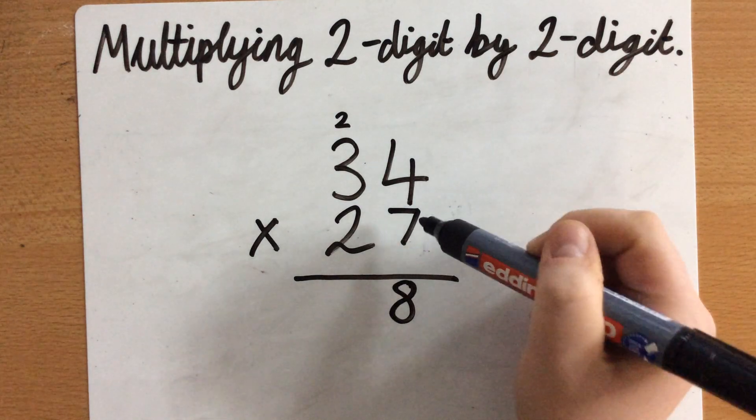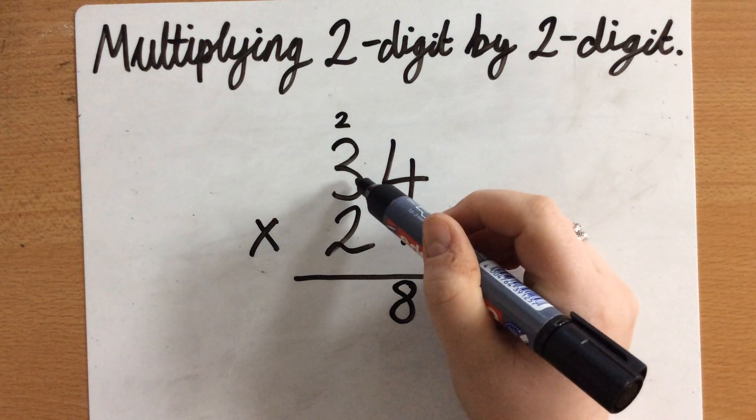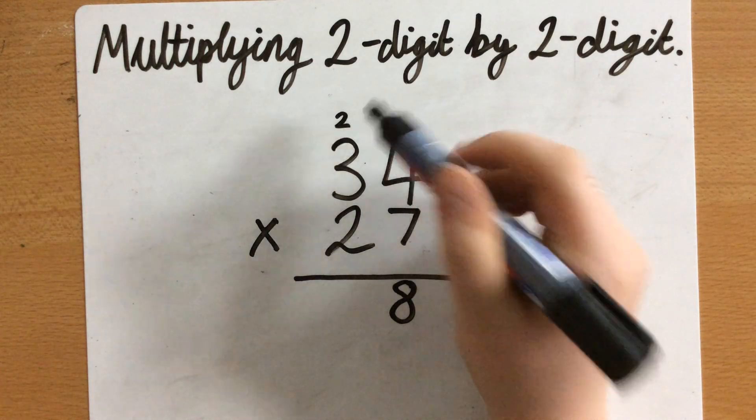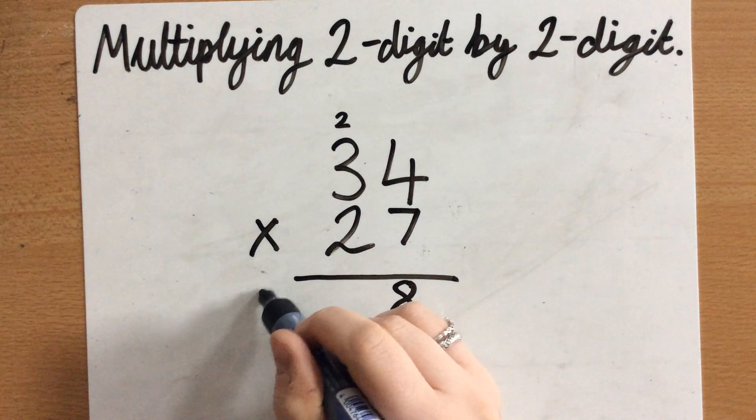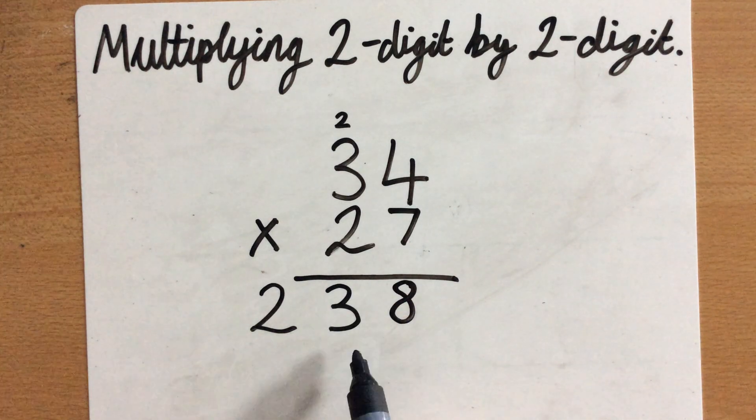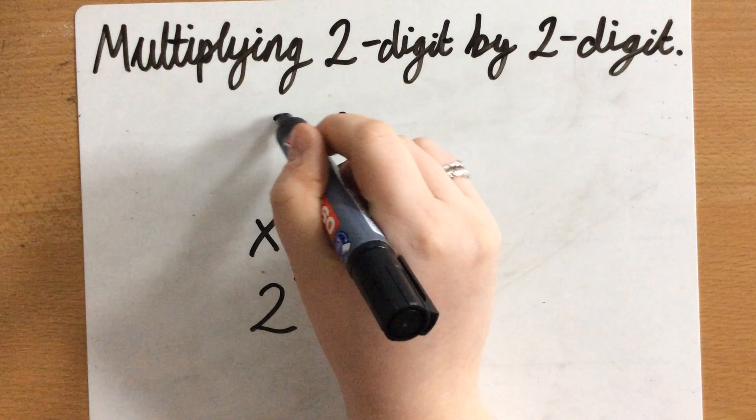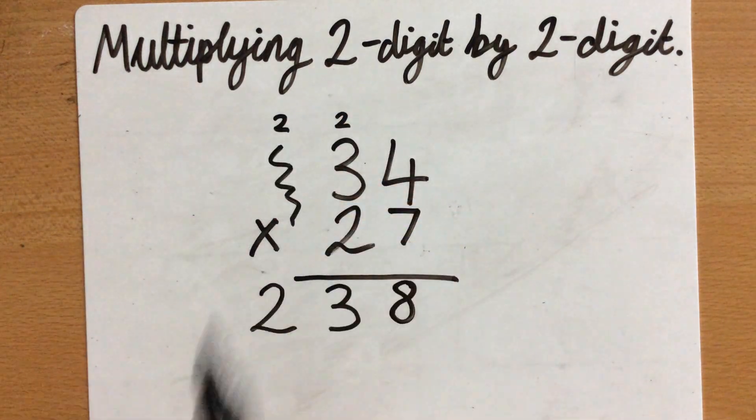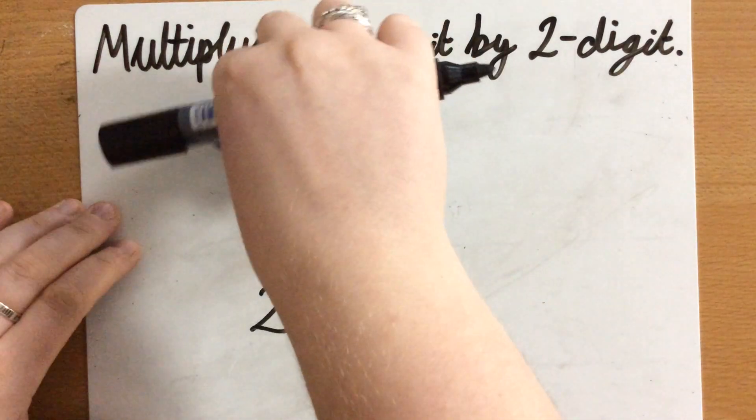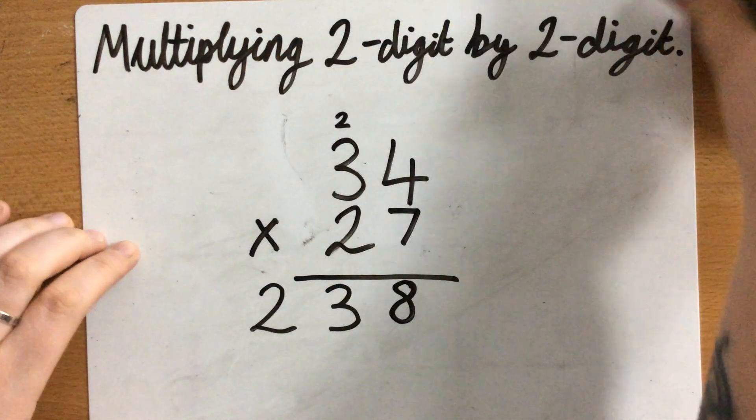So I've just done 7 times 4 is 28. Now I need to do 7 times 3. So 7 times 3 is 21. Add the 2 that I've had to carry over is 23. So because I haven't got another column to multiply, I can just write the 23 there. If I were to carry the 20 over here, I haven't got a column here that I'm going to work out. So I just get to write the 23 for that part of the question.